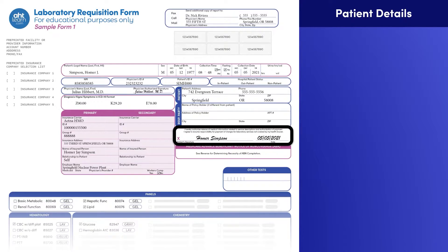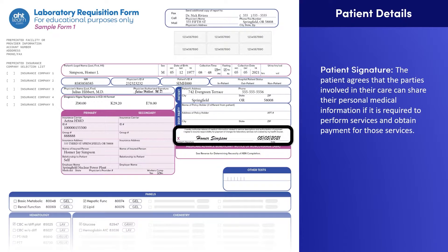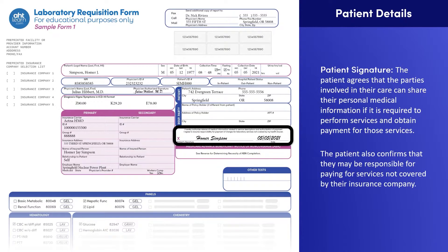The patient's signature field is a critical form field. By signing the form, the patient agrees that the parties involved in their case, such as a lab and insurance company, can share their personal medical information if it is required to perform the services and obtain payment for those services. By signing, the patient also confirms that they may be responsible for paying for services not covered by their insurance company.